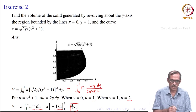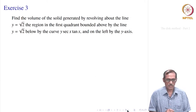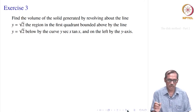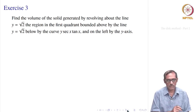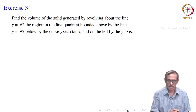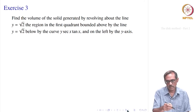So this is how we proceed. Now we want to find the volume of the solid generated by revolving about the line y equal to √2. It is not any axis — it is a line y = √2. We revolve the region in the first quadrant bounded above by the line y = √2. The axis of revolution is really one of the boundaries.